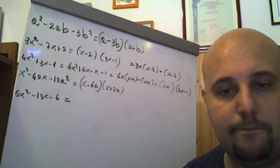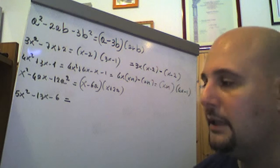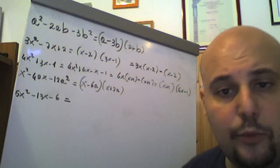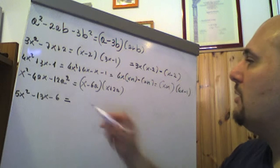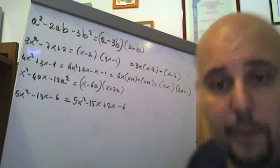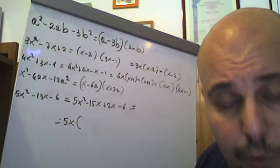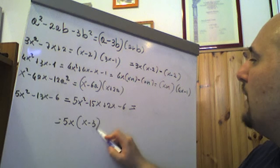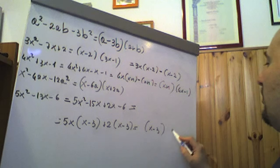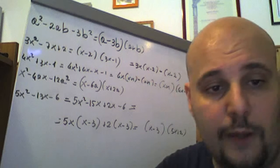5x² − 13x − 6 non è un trinomio notevole. Moltiplichiamo 5 per −6 = −30. −30 = −15 × 2, con −15 + 2 = −13. Scriviamo 5x² − 15x + 2x − 6, raccogliamo 5x: 5x(x − 3), poi 2(x − 3). Raccogliendo (x − 3): la scomposizione di 5x² − 13x − 6 è (x − 3)(5x + 2).